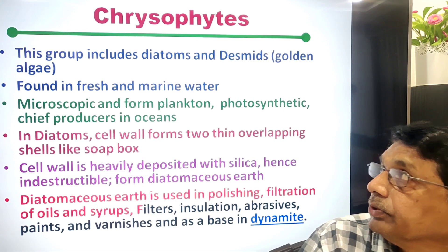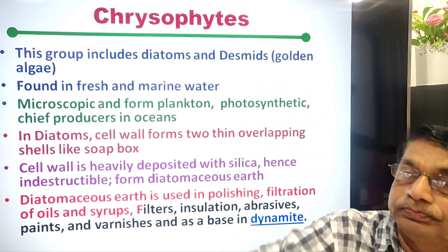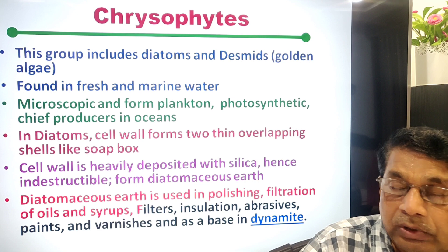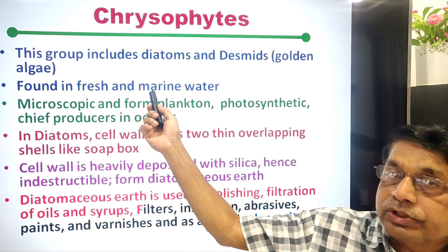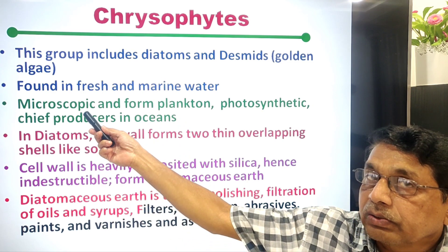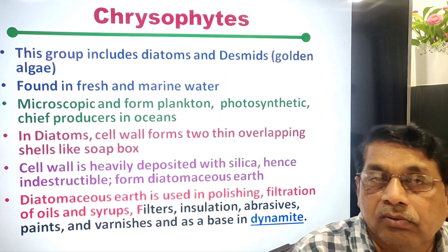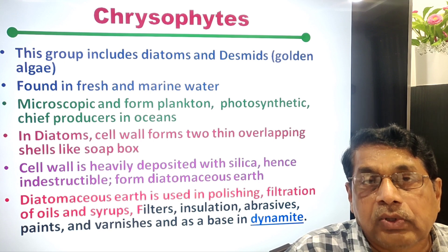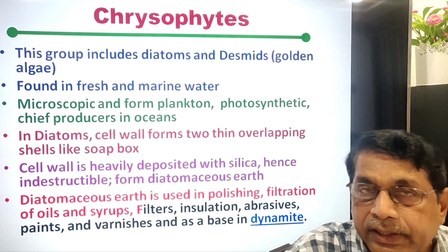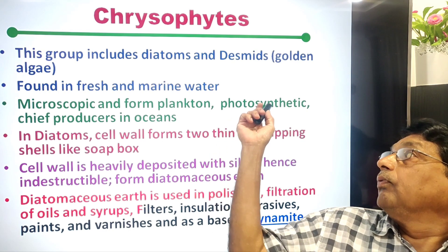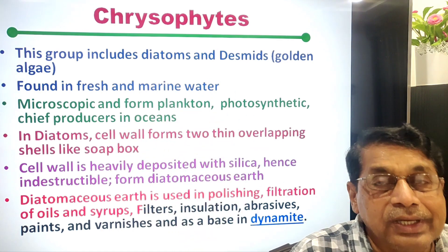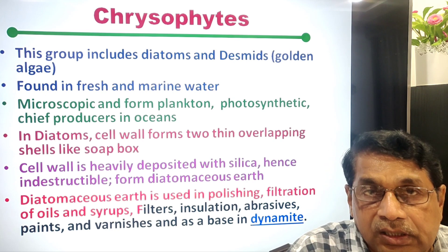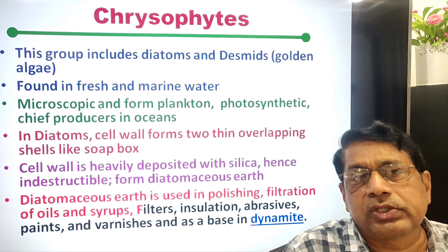Chrysophytes include diatoms and desmids, which are called golden algae. Earlier they were studied under algae. They are found in freshwater, marine, and oceanic water, and are microscopic. They form planktons — microscopic forms floating on the surface of water, either actively or passively. They are photosynthetic and the chief producers in oceans; when they grow extensively they cover the sea surface and serve as the chief producers for all living organisms inside the sea.